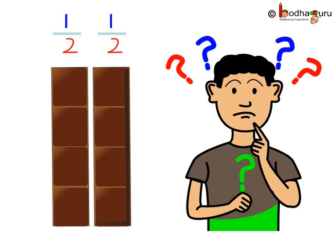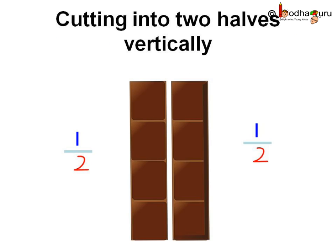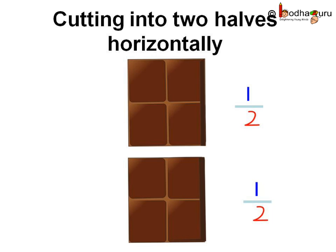Is this the only way to cut the chocolate bar into halves? No, there are other ways too. First we cut it vertically into two equal pieces. Here we cut the chocolate into halves by cutting it horizontally. Still we get halves. So one half and another half make a whole.